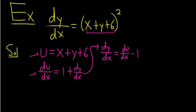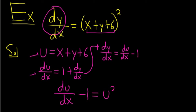So dy/dx is simply du/dx minus 1. That's this piece here. That's equal to u squared.